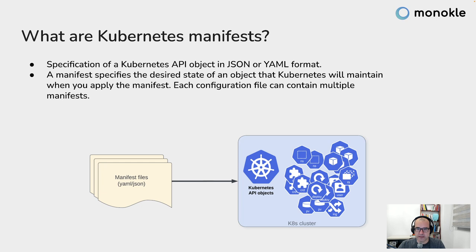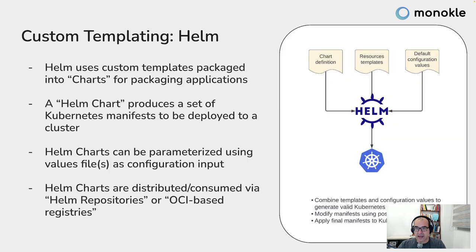You can have different manifests in one configuration file or one manifest per file — there are many ways to manage that. Manifests are used everywhere. The first important tool specifically is Helm, which is widely used with Kubernetes and uses templating to package applications into charts. A chart consists of three things: metadata, a set of manifest templates that will be deployed, and configuration values that are mixed with the templates to produce all the final manifests that are actually deployed.